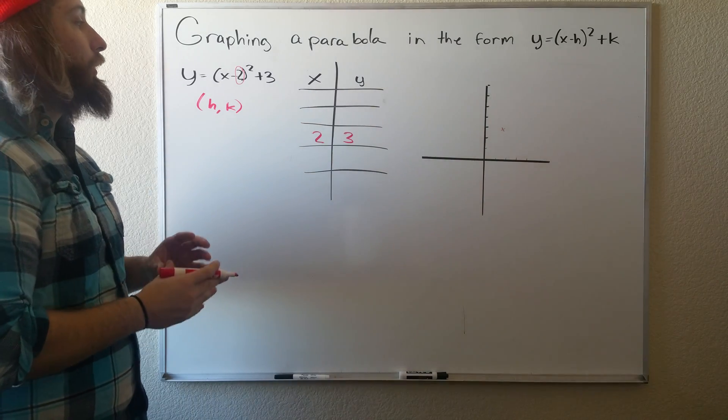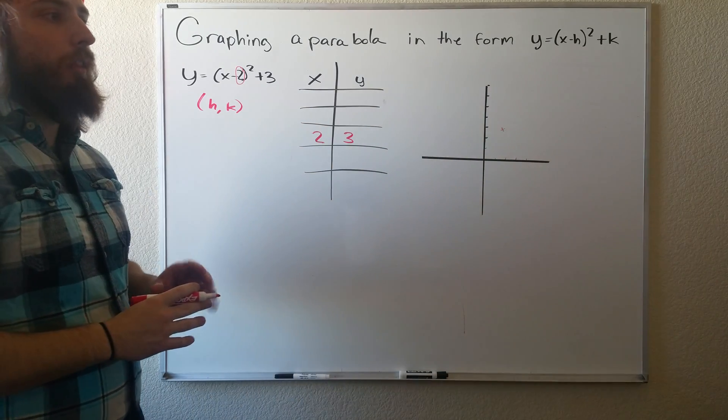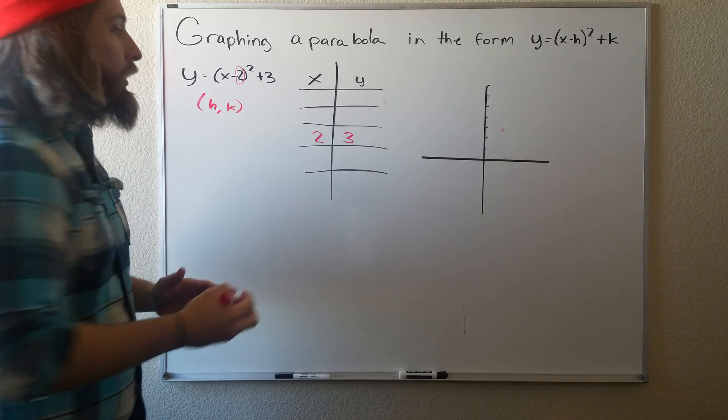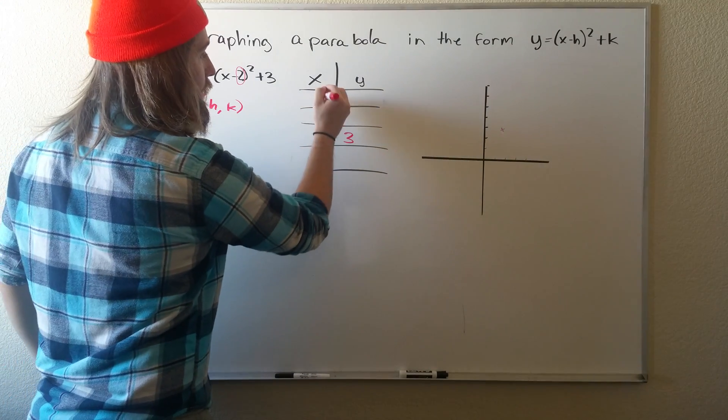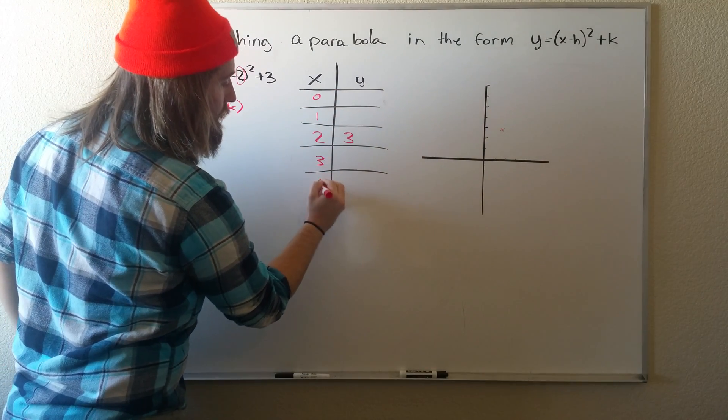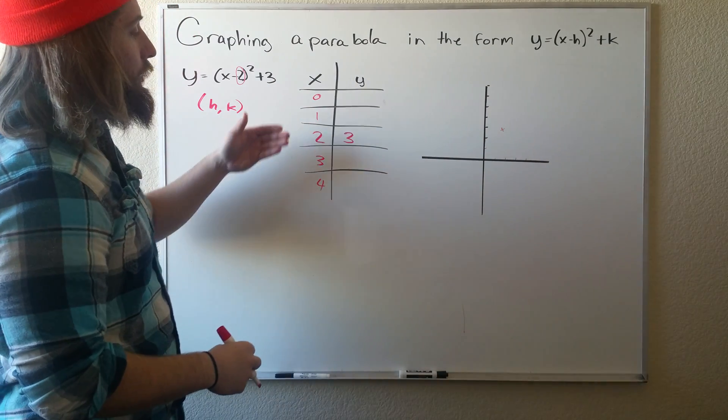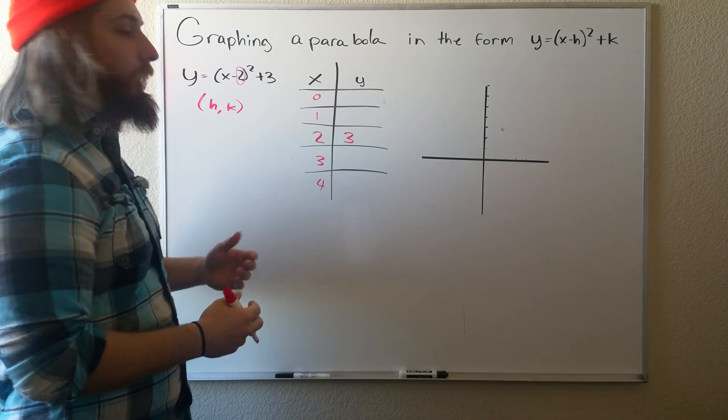All right, so now for the other four points, we just go 1, 0, 3, 4. So we just go 2 on each side by intervals of 1.